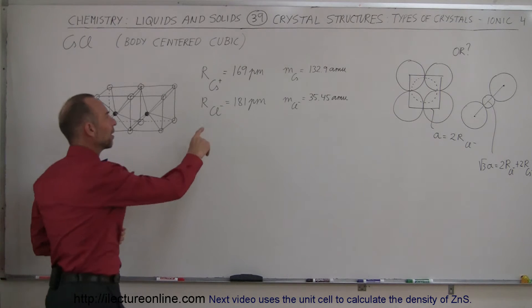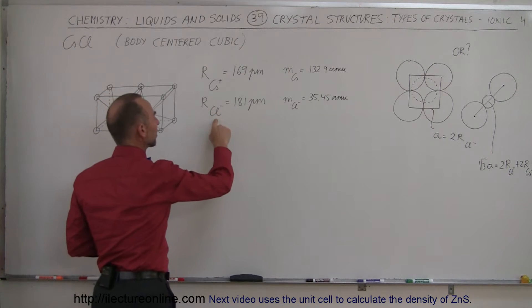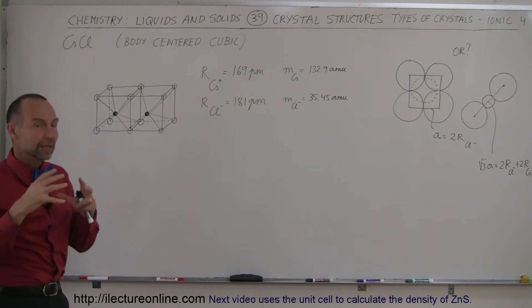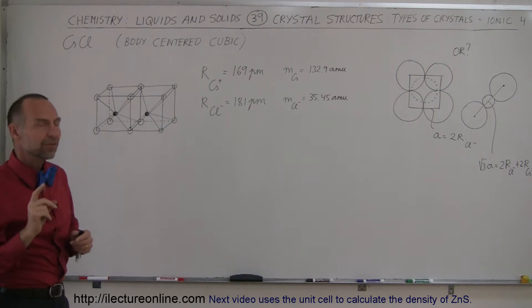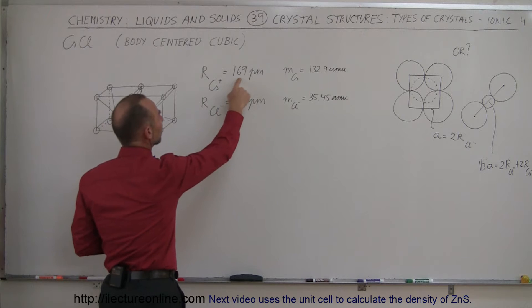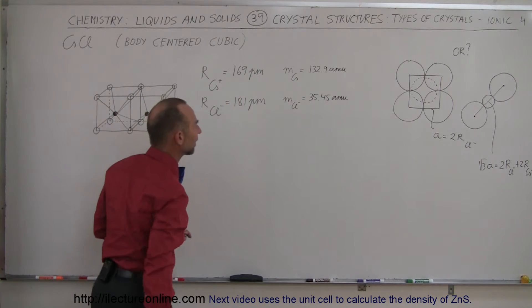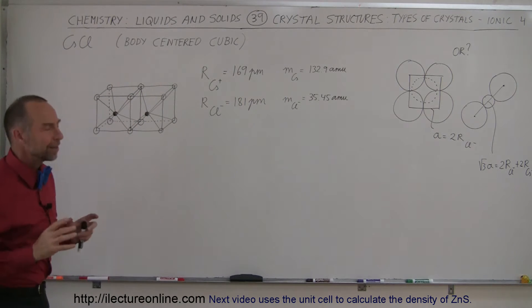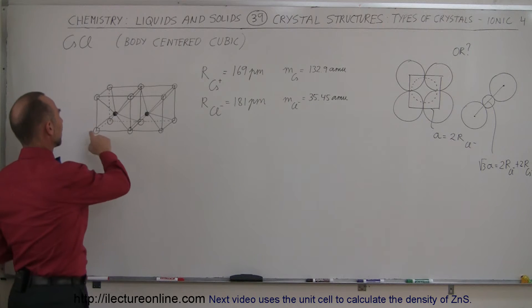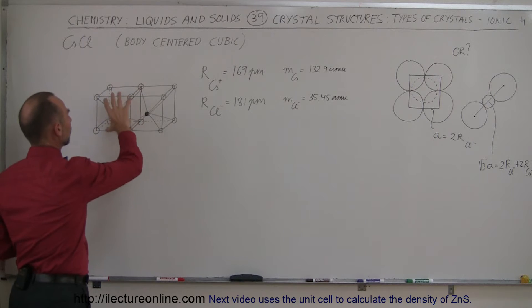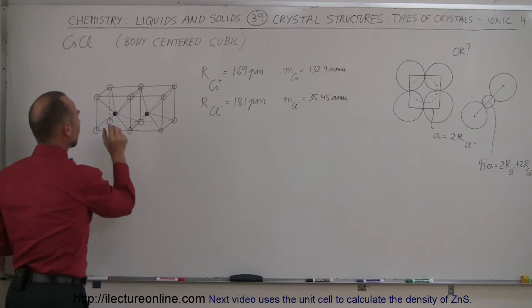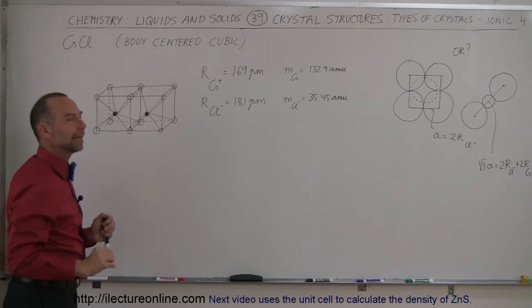We have a positive ion — cesium — and a negative ion — chlorine. Typically the negative ions, the anions, are larger than the cations, and that is indeed the case here, but there's not a lot of difference. The radius is 181 picometers for chlorine and 169 picometers for the cesium ion. Since they're about the same size, we have a different kind of structure. The structure works by drawing a cubic structure with corners at the chlorine ions, giving us one single cesium ion in the center.